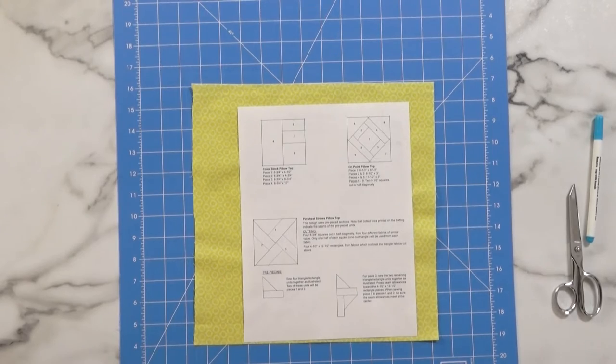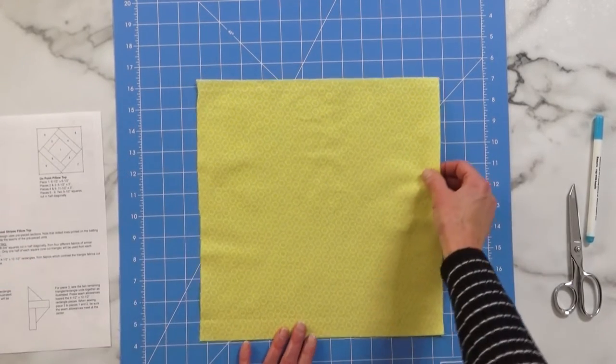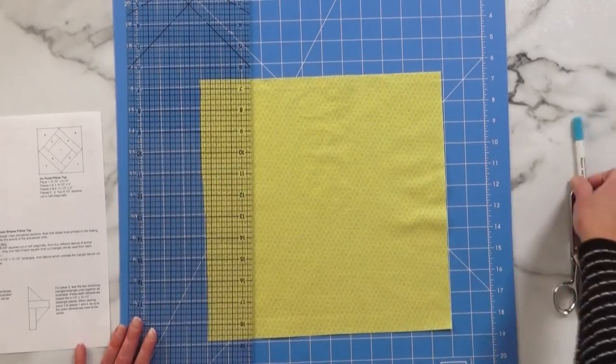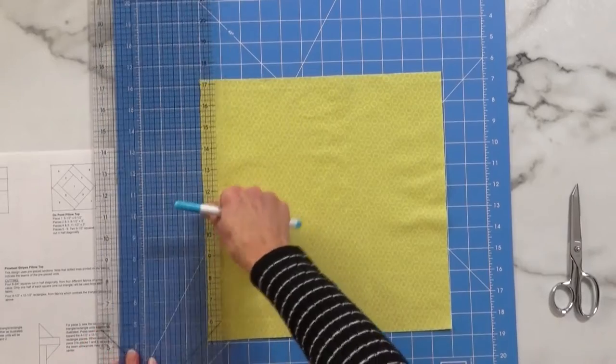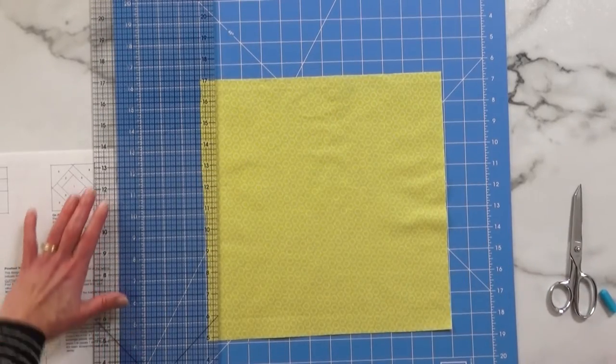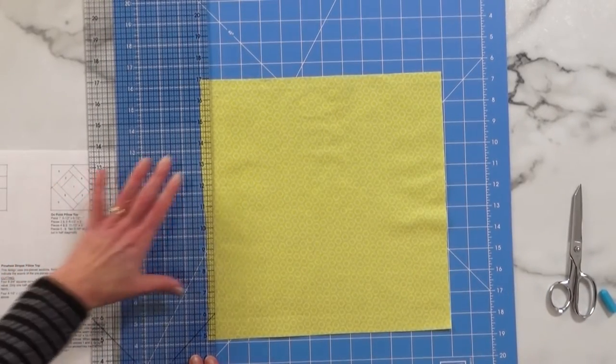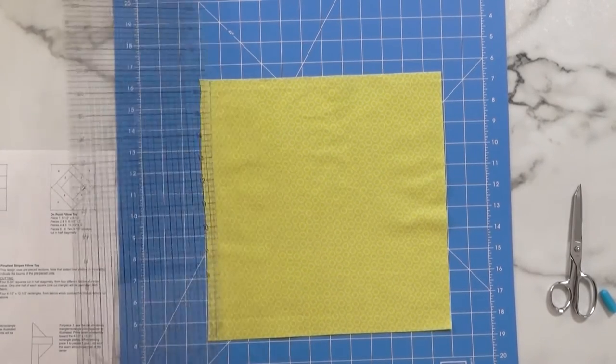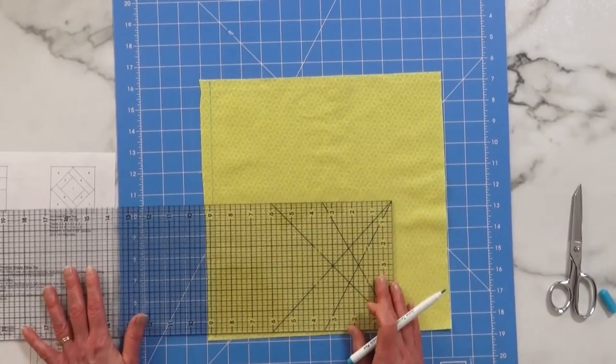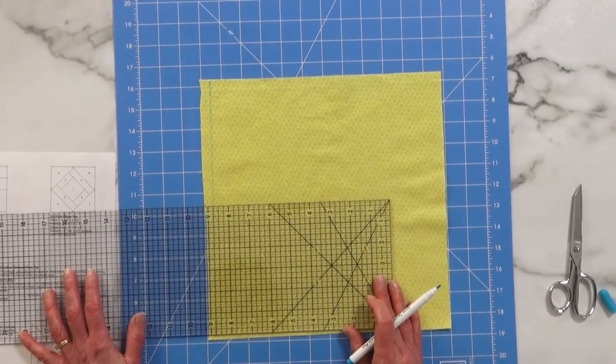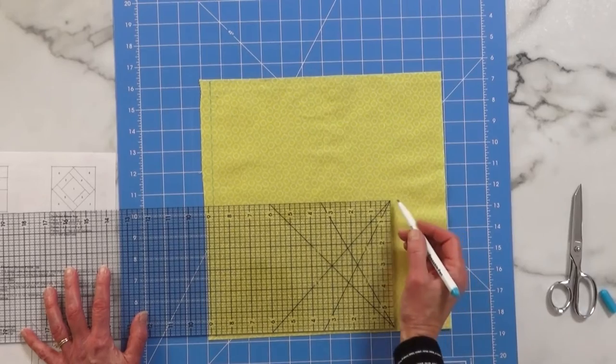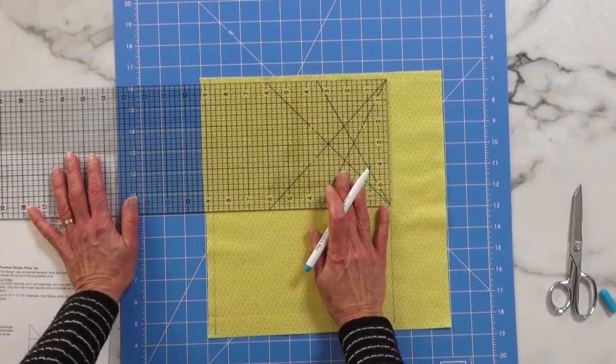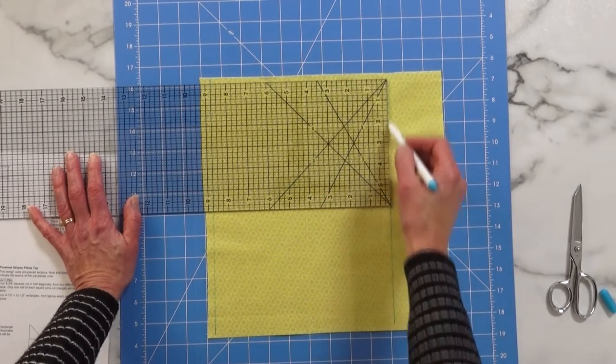We're going to start by cutting our yellow fabric into an eight and three quarter inch square. There's many different ways that you can cut your fabrics. I'm going to show you the basic method of just marking and cutting it with the scissors. So you want to start with a straight line and then you want to draw a parallel line at eight and three quarters. So mark that there and with the eight and three quarter line of my ruler mark that.